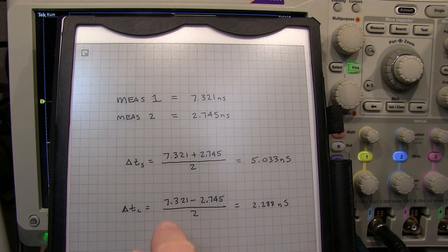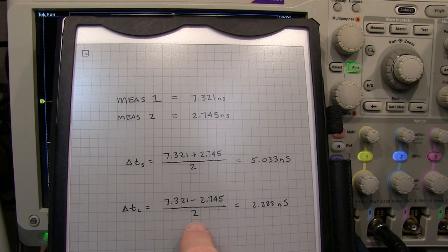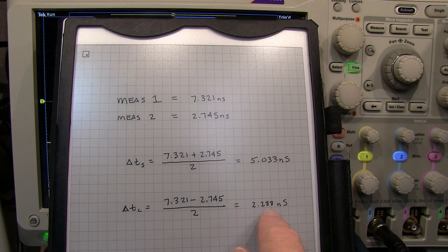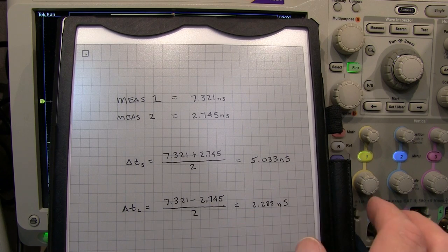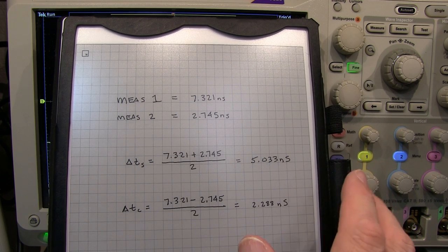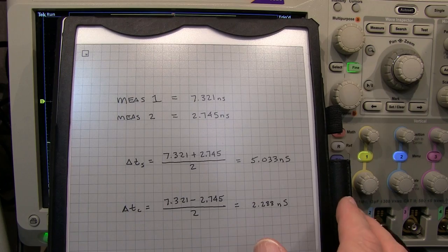And the difference of those measurements divided by 2 gives me 2.288 nanoseconds, which is consistent with about an 18 inch or 46 centimeter difference in coaxial cable length.